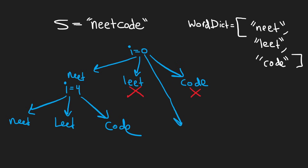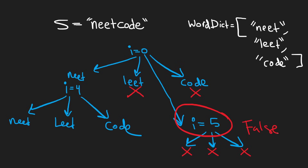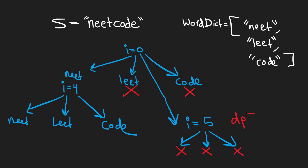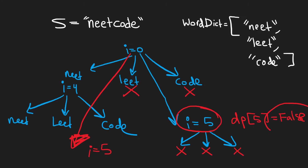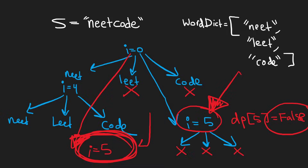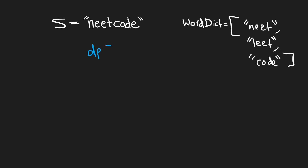It may not be obvious why we need a cache, but imagine another path led us to i = 5 and none of the three word choices yielded a match — we'd return false from that path. We'd cache that as dp[5] = false. If another path later tries i = 5 again, we can return false immediately without redoing all that work. Our base case is dp[8] = true, since 8 is the length of the string.